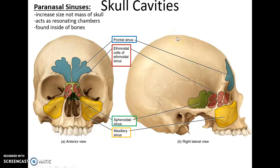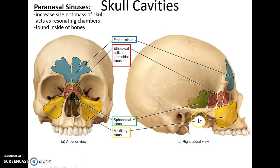Paranasal sinuses are air spaces found within some of the bones of the skull. They help to lighten the weight of the skull and act as resonance chambers. You have the frontal sinuses in the frontal bone, the ethmoidal sinuses in the ethmoid bone, the sphenoidal sinuses in the sphenoid bone, and the maxillary sinuses in the maxilla bone.